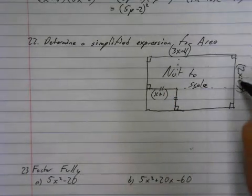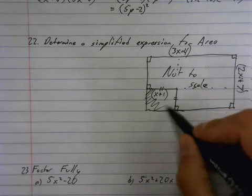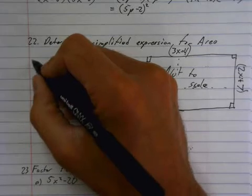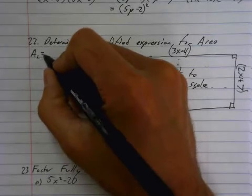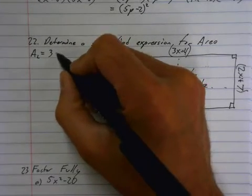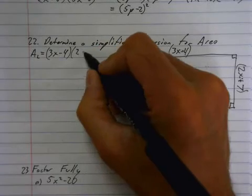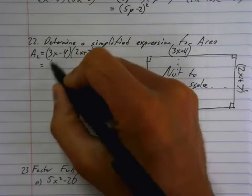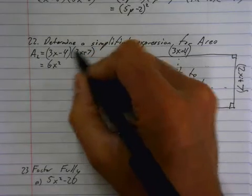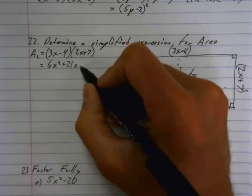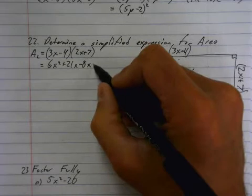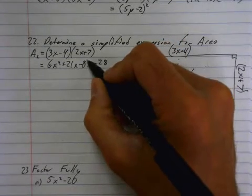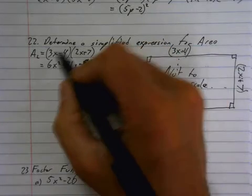So, I'm just going to find this whole area, and then I'm going to subtract that area. Okay. So, area large is going to be 3x minus 4 times 2x plus 7, which is going to be 6x squared plus 21x minus 8x minus 28. Everybody follow where those numbers are coming from?